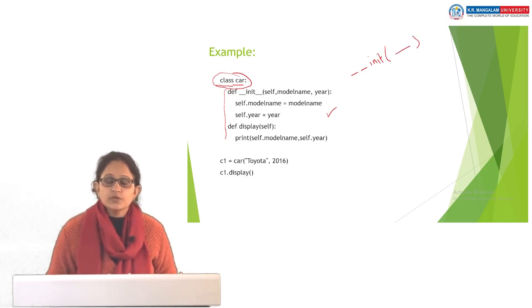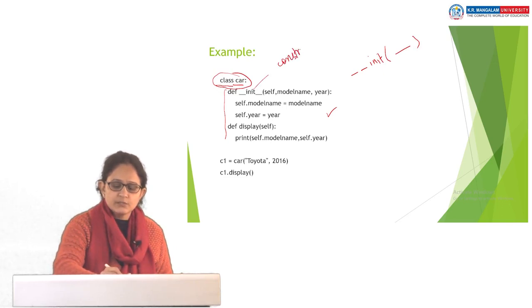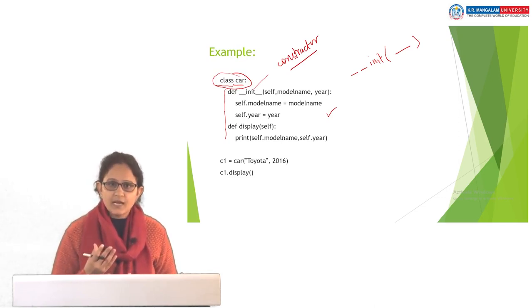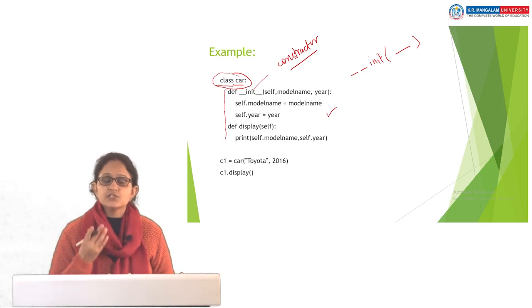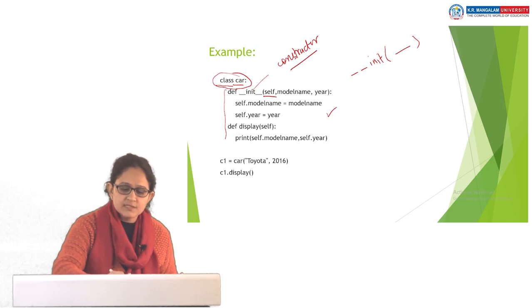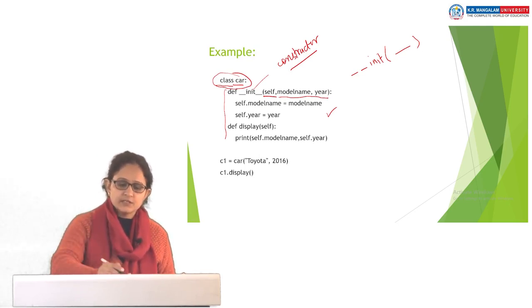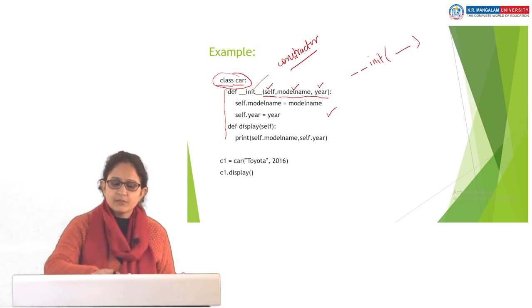We declare the method using def followed by double underscore init double underscore, and then the set of parameters. Init is like a constructor in Python — it basically initializes the values of the attributes for the class. Almost every class will have this init method. Every method in a class has self as the first parameter, and the rest of the parameters depend on the requirement of your class. In this example, the Car class has three parameters in the init method: self, model_name, and year. Under this we are initializing the values to the attributes of the class.